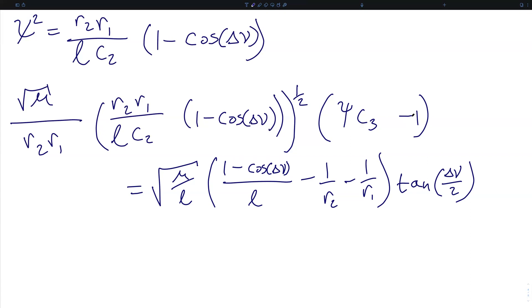This equals the square root of mu over l times the quantity 1 minus cosine delta nu over l minus the reciprocal of r2 minus the reciprocal of r1 all times the tangent of half of delta nu.